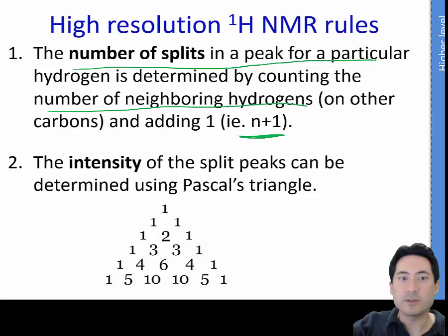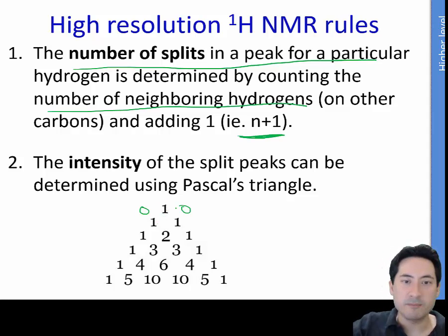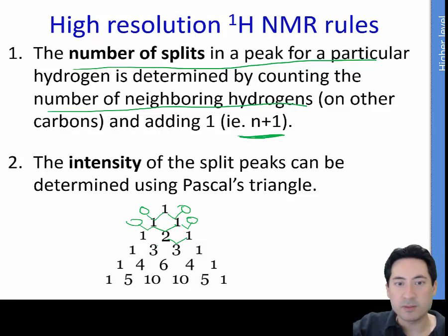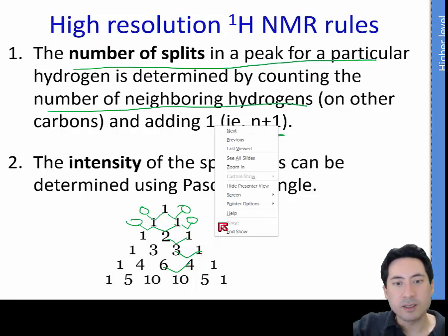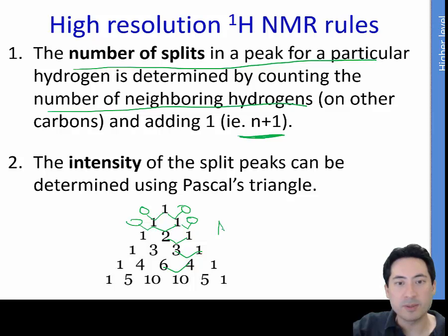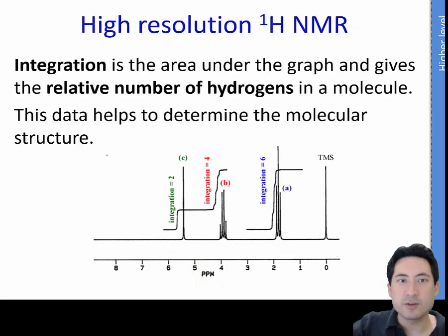To work out the number of peaks, use Pascal's triangle. Start with one, then add neighboring values: 0+1=1, 1+1=2 (giving 1,2,1), then 1,3,3,1, and so forth. By knowing the number of neighboring hydrogens you know the number of peaks, and vice versa. You won't have to integrate areas under the graph, but the integration of the area also gives the relative number of hydrogens.